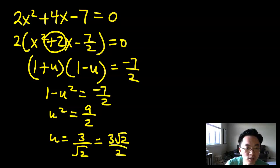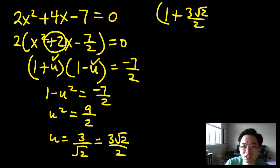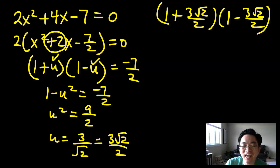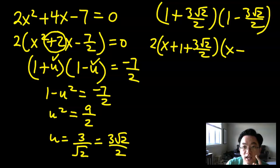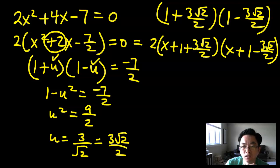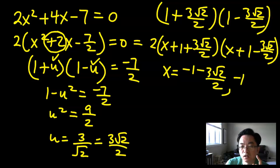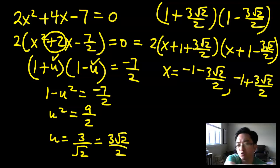It didn't factor nicely, but now I have u, so I can plug it back in: 1 plus 3√2/2 and 1 minus 3√2/2. Writing in factored form: 2 times (x plus 1 plus 3√2/2)(x plus 1 minus 3√2/2) equals zero. Therefore x equals negative 1 minus 3√2/2, or negative 1 plus 3√2/2. There you have it — the quadratic method, brought to you by Dr. Po Shen Lo from Carnegie Mellon University. Take care.